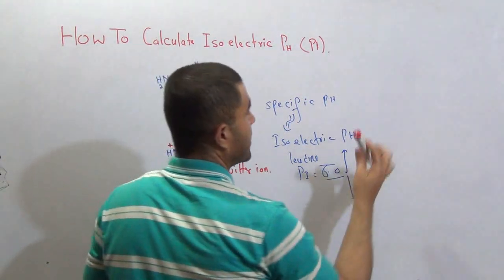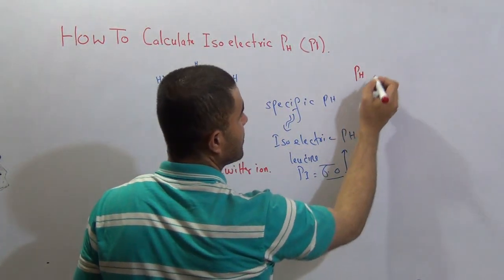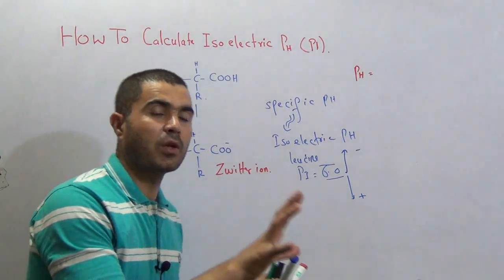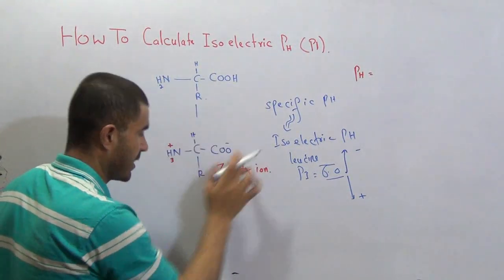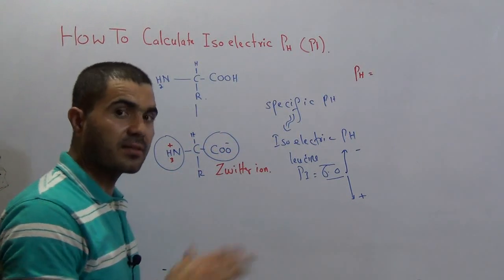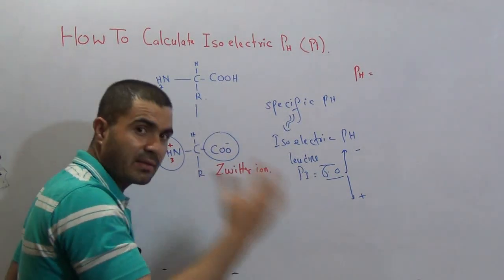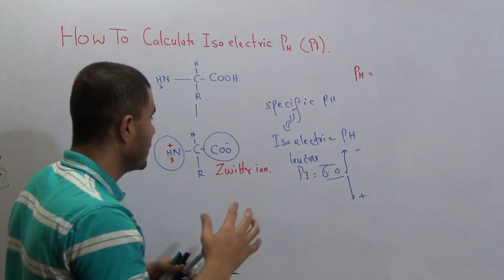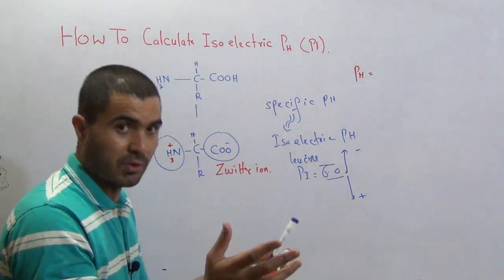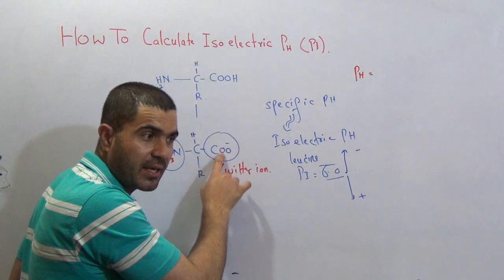Now, how do we calculate the isoelectric pH? There is a formula. You need to check how many ionizable groups are present in the given amino acid. One ionizable group is the carboxylic group and another is the amino group. Some amino acids contain two carboxylic groups and one amino group, giving three ionizable groups total.